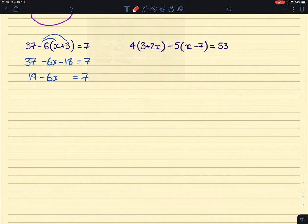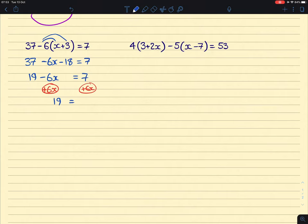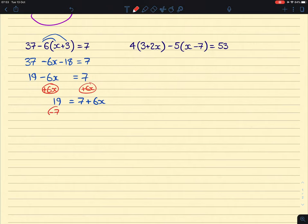Then a little bit of rearranging. Anytime we have a negative x term, we want to really get rid of that so that it will pop up on the other side positive. So if we add 6x, that will make it disappear. Do the same on the other side. You get 19 on the left, 7 plus 6x on the right. And we're going to take away 7 from both sides to get rid of that 7, giving us 12 equals 6x.